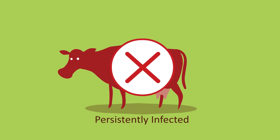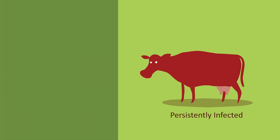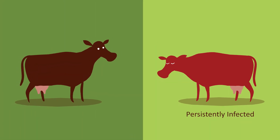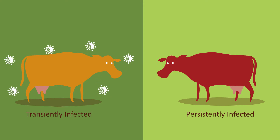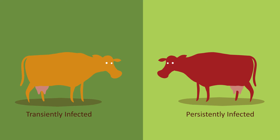If PI animals are removed, then the disease will die out in your herd. The BVD virus can also be spread by contact of susceptible animals with infected ones, such as at markets or over the fence, and this is known as transient infection. Transiently infected cattle will shed infectious virus for several weeks, during which time they present a risk to other cattle.